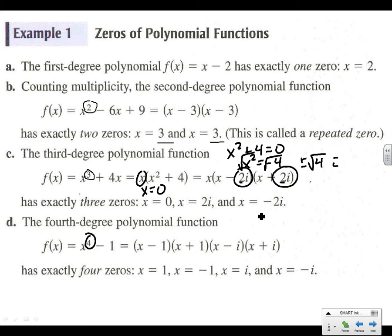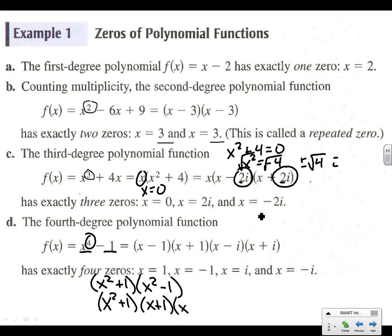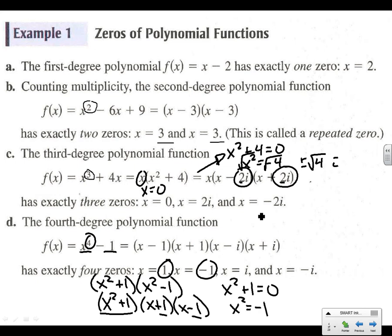And then we've got this fourth-degree one. If we were to factor this, it's a perfect square minus 1, so we could split it into (x² + 1)(x² − 1), and then factor the second parentheses again into (x + 1)(x − 1) since it's the difference of perfect squares. So there are two real zeros: 1 and negative 1. But then we've also got x² + 1. Setting x² + 1 = 0 gives x² = −1, so x equals plus or minus i.